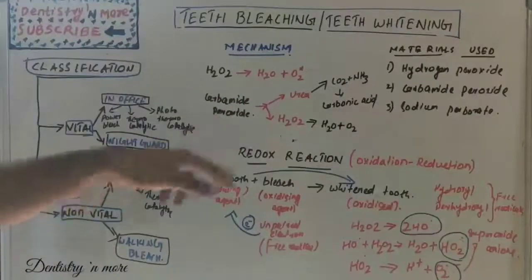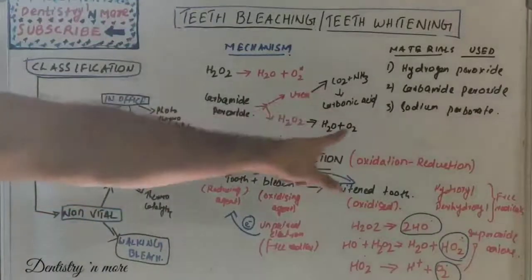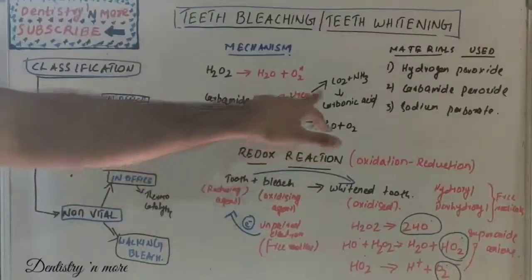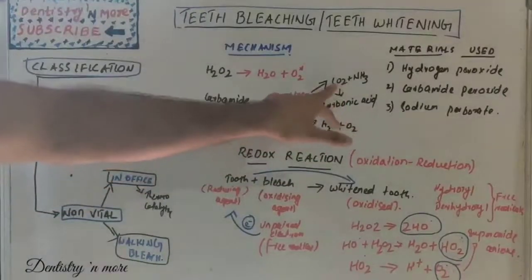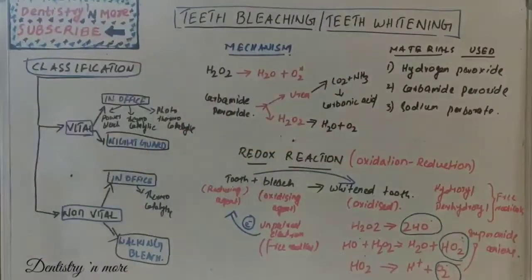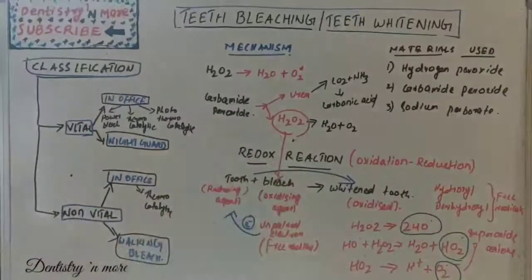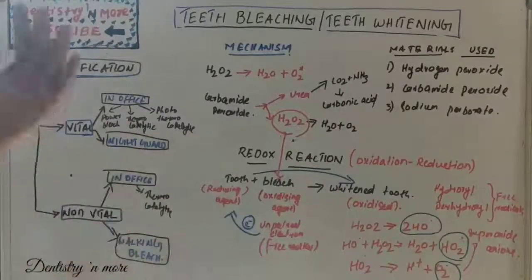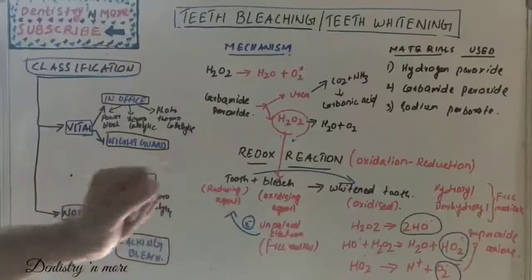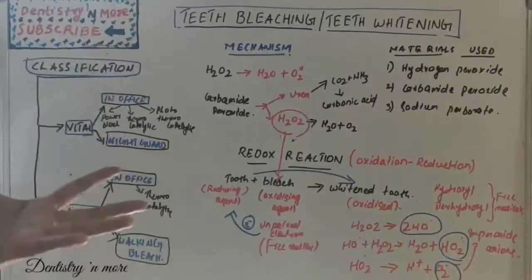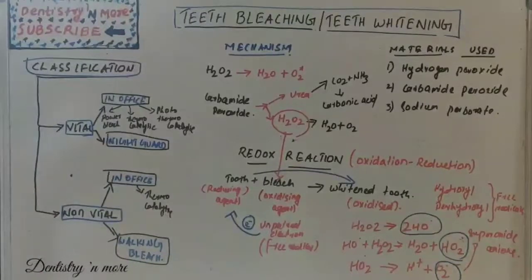The bleach becomes the oxidizing agent because hydrogen peroxide, carbamide peroxide, or sodium perborate releases hydrogen peroxide after a chemical reaction. Carbamide peroxide dissociates into urea and hydrogen peroxide; the urea converts to ammonia and carbon dioxide, which changes to carbonic acid. The hydrogen peroxide is what ultimately becomes the oxidizing agent, oxidizing the tooth.